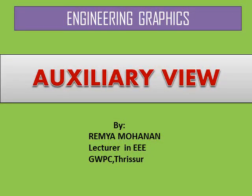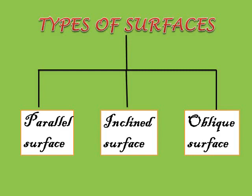Hi students, this is Remia Mohanan, lecturer in Electrical at GWPC Trishur. Today I'm going to discuss about auxiliary view. Before we go into the details of auxiliary view, let's understand the types of surfaces. Depending upon the orientation of the surface, there are three types of surfaces: parallel surface, inclined surface, and oblique surface.